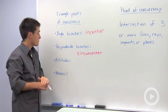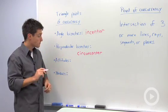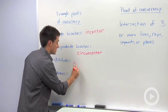The next type is the three altitudes. If you construct the three altitudes of a triangle, you're constructing a point of concurrency known as the orthocenter.